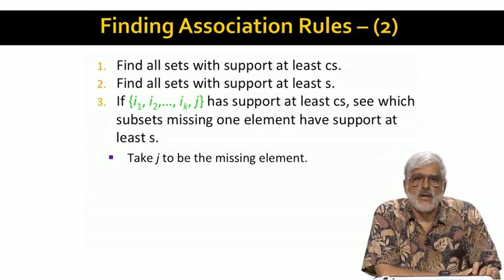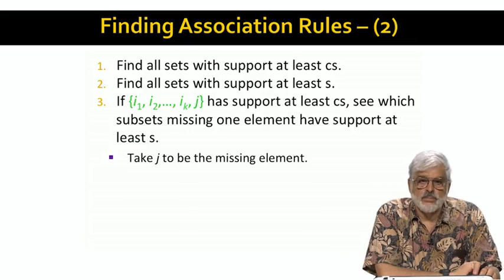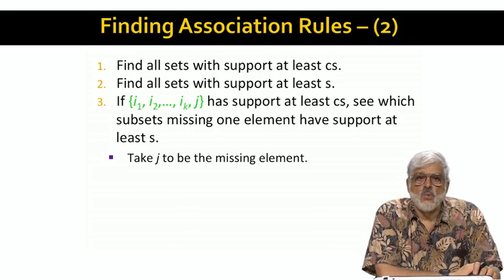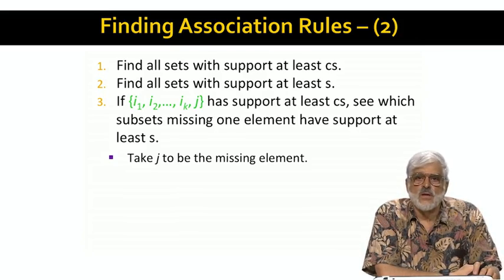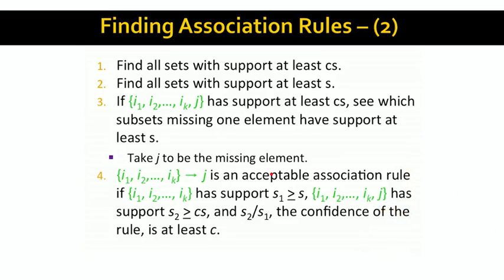Having removed J, look at the support of the remaining set I1 through IK. If it is at least S, we might have an association rule with that set on the left and the K plus first item J on the right. Suppose the set without J has support S1, and with J the support goes down to S2. Then the confidence of the rule is the ratio S2 over S1, because that is the fraction of the baskets with I1 through IK that also contain J. If that confidence is at least C, then we have an acceptable association rule.